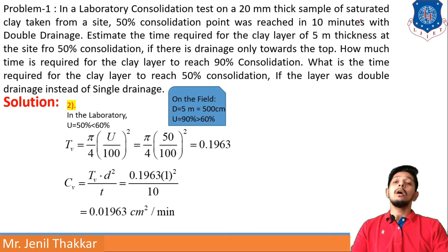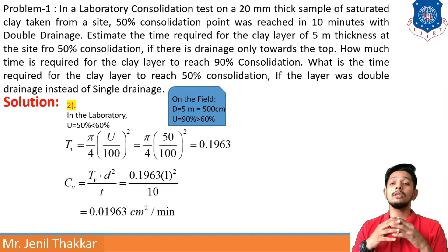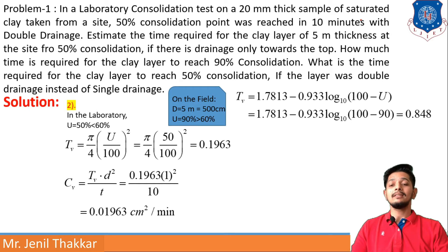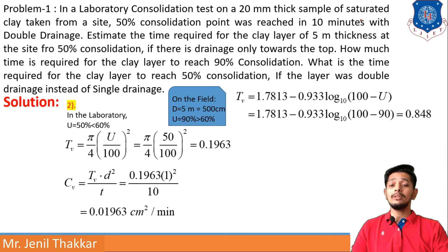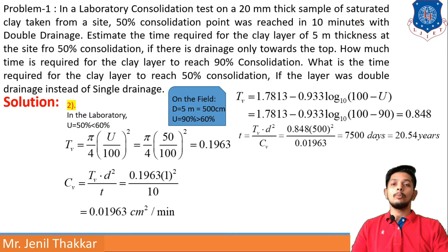For the field layer, D is 5 m or 500 cm, and U is 90% consolidation. Since U is greater than 60%, we use the formula: Tv = 1.7813 − 0.933 × log₁₀(100 − U). This gives Tv = 0.848. With Tv, Cv, and D known, we can find the time required. Putting all values into the equation, the time required comes out as 2554 years.